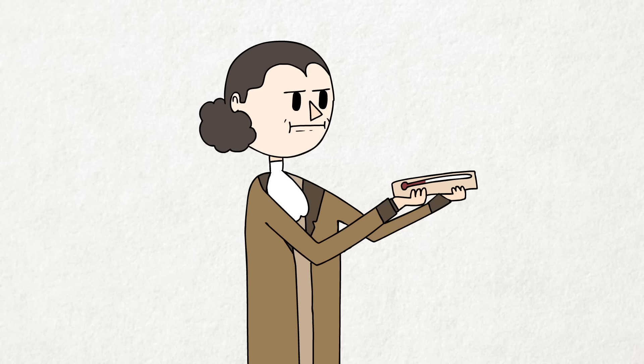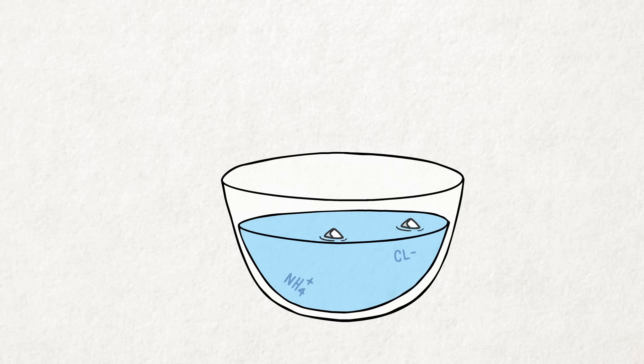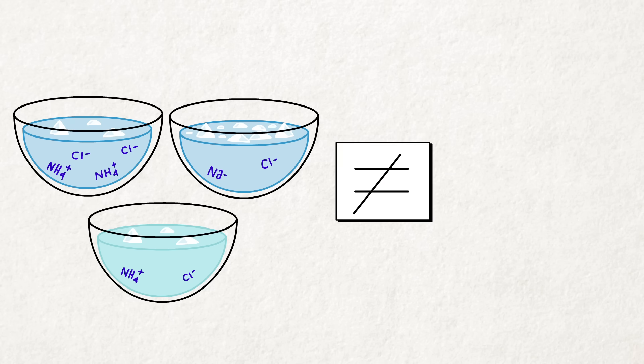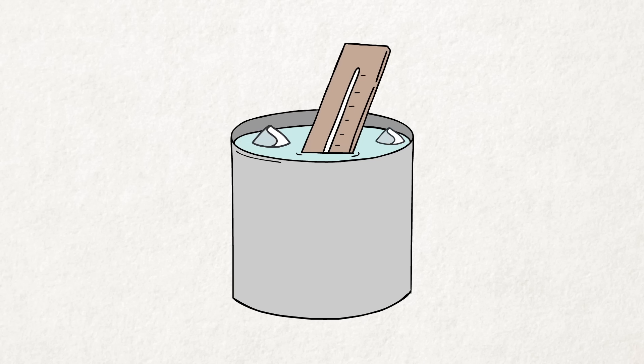So what exactly did zero represent on the scales of Fahrenheit and Romer? By many accounts, it's the temperature of a salt, ice, and water mixture. The only problem is, there are different descriptions of these mixtures, and none of them actually produces the temperature they're supposed to. More likely, I think they picked the coldest temperature in winter, set that as zero, and later used ice and brine to calibrate new thermometers.